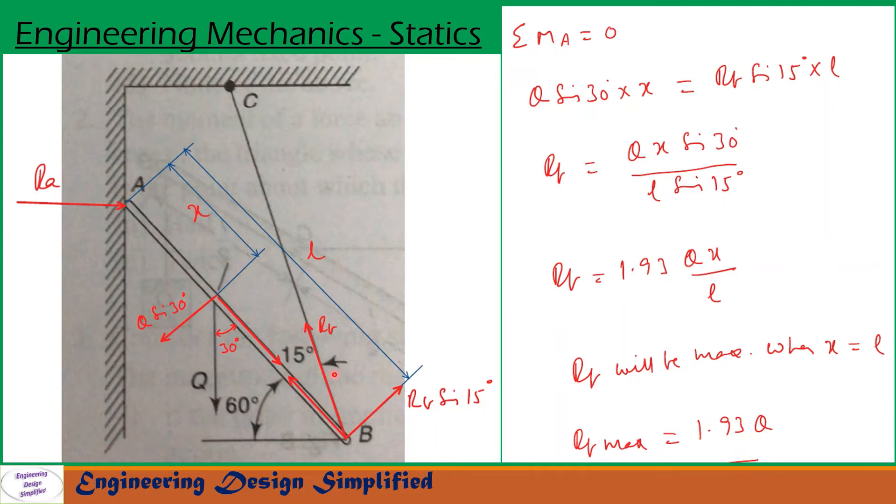So similarly the cable BC will experience a tension. Let us call that RB. So in the problem it is given S. So RB is acting along this cable BC. So since this angle is 15 degrees the component of RB perpendicular to this bar will be RB sin 15 and the component of RB along this bar will be RB cos 15. So here a reaction R will be acting perpendicular to this bar that is shown here.